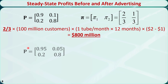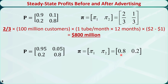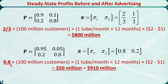The advertising firm is offering to change the transition matrix so that the first row becomes 0.95 and 0.05. Following the procedure for calculating the steady state distribution, we find the new steady state is 0.8 and 0.2 — meaning brand 1 will have an 80% market share. The new profit equals 0.8 times 100 million customers times 1 tube per month times 12 months times $1 profit, minus the $50 million advertising cost, which equals $910 million per year. Since 910 is greater than 800, it is totally worth it to hire the advertising firm.